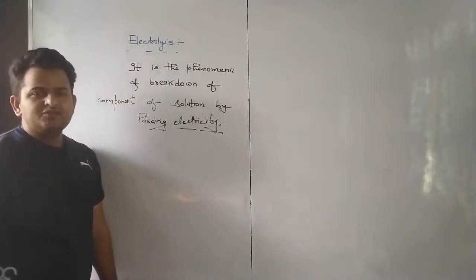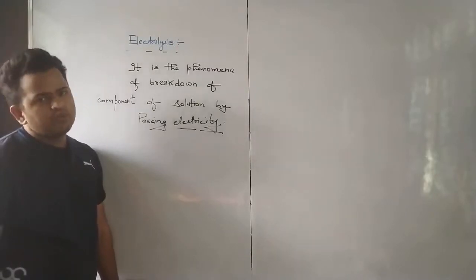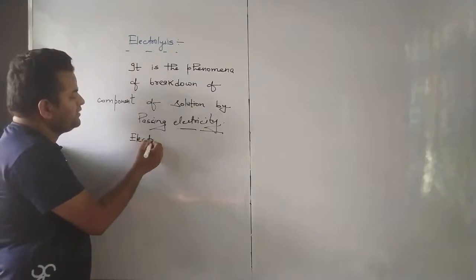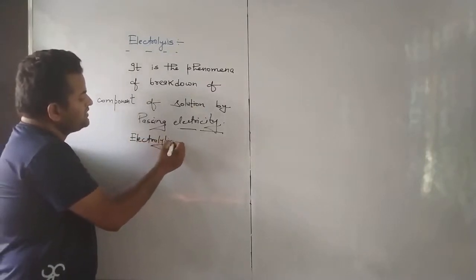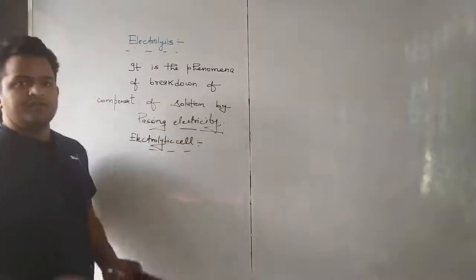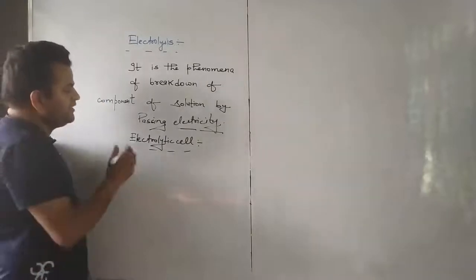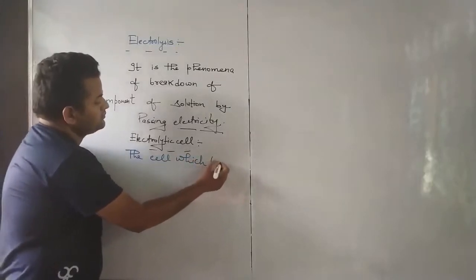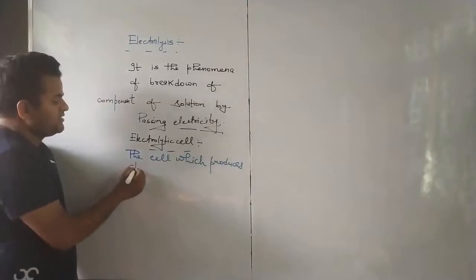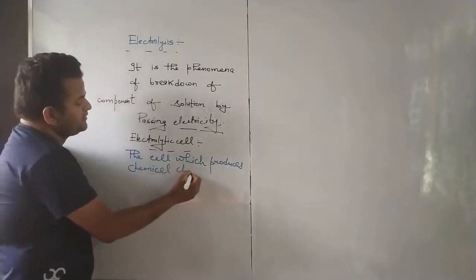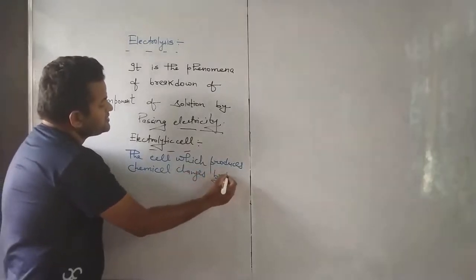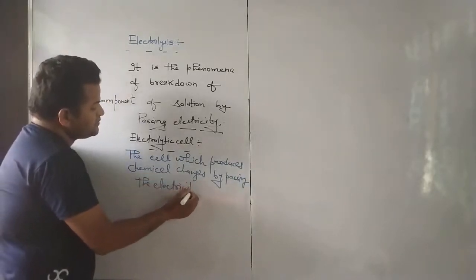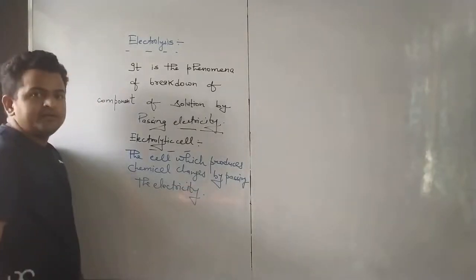The cells which were studied first were those that use electricity to bring about chemical changes — we call them electrolytic cells. So the electrolytic cell is: the cell which produces chemical changes by passing electricity.